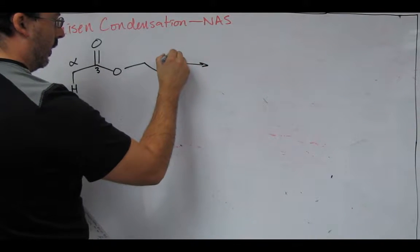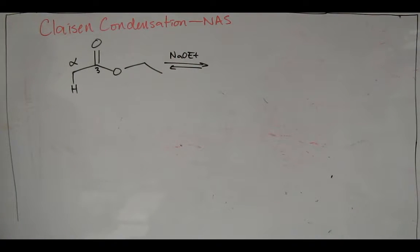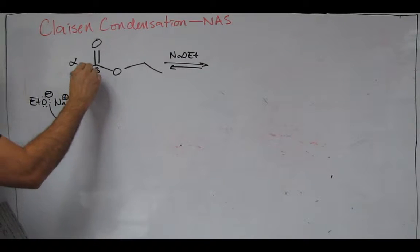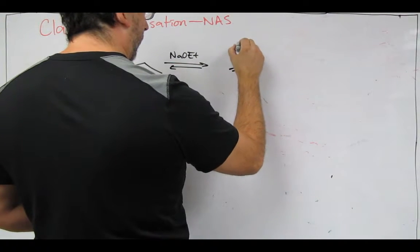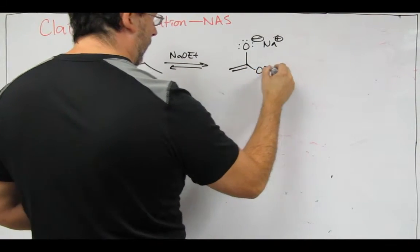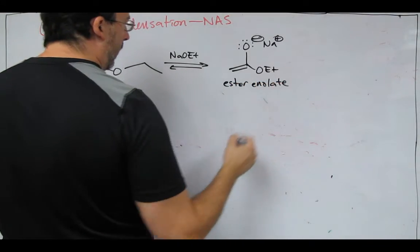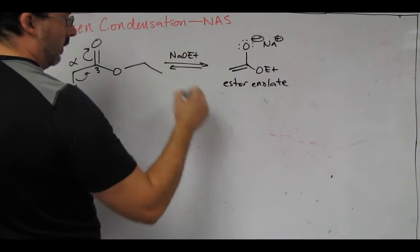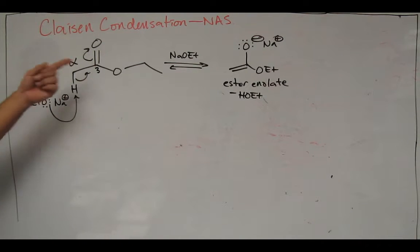We're going to treat that with sodium ethoxide as our base, so we're going to do an acid-base reaction. That's going to generate our enolate. This is an ester enolate. Our byproduct of that will be ethanol, so we're establishing an equilibrium.